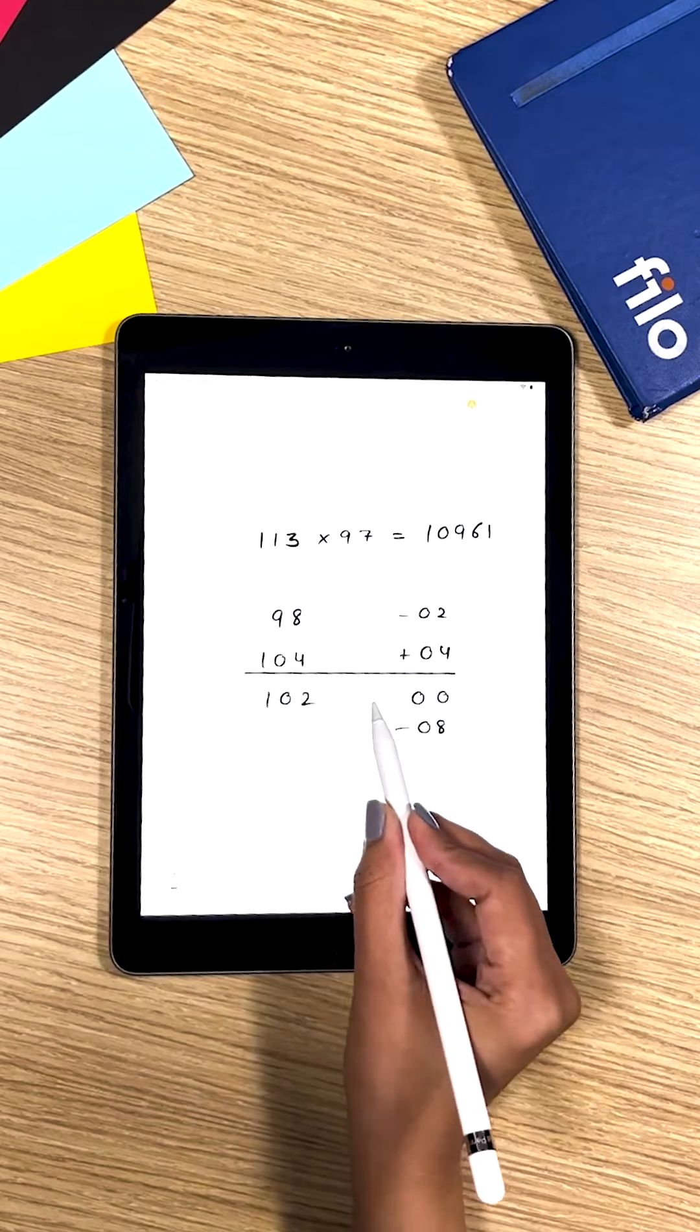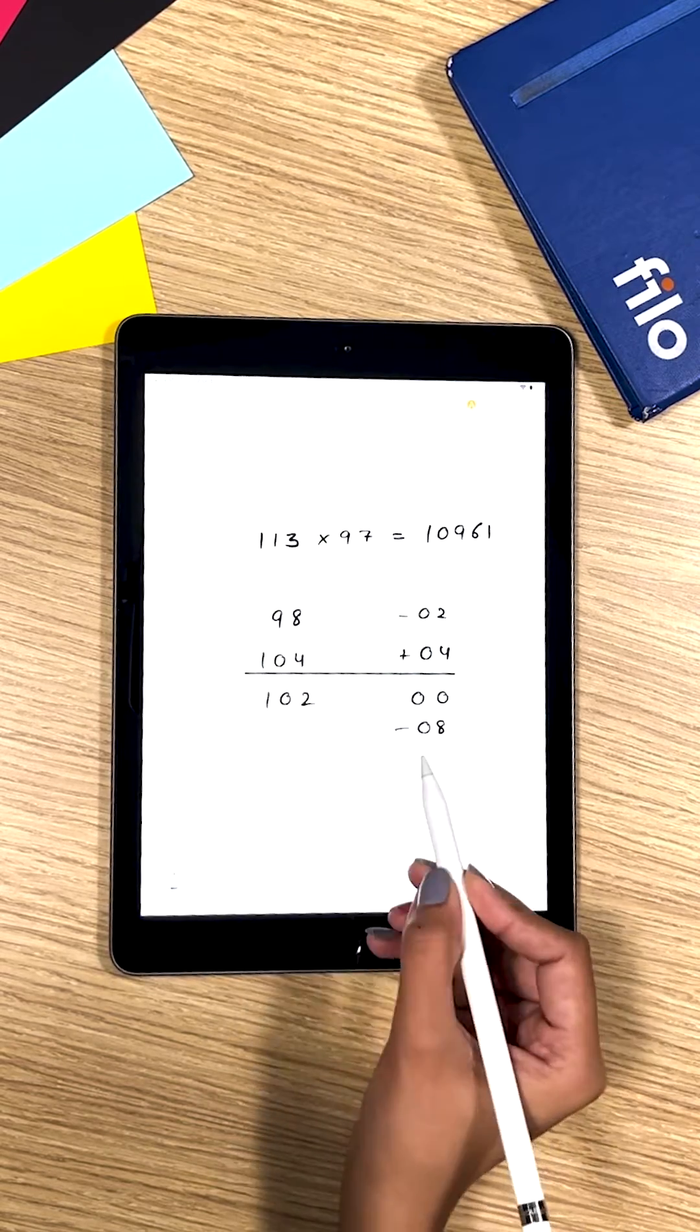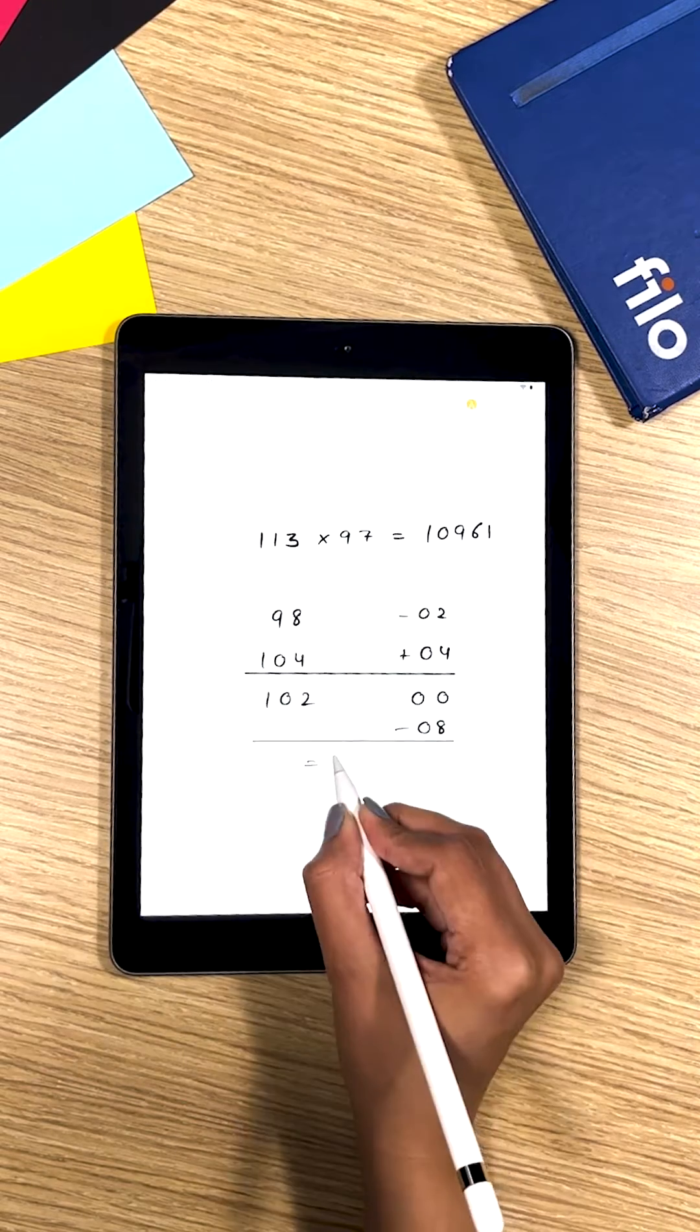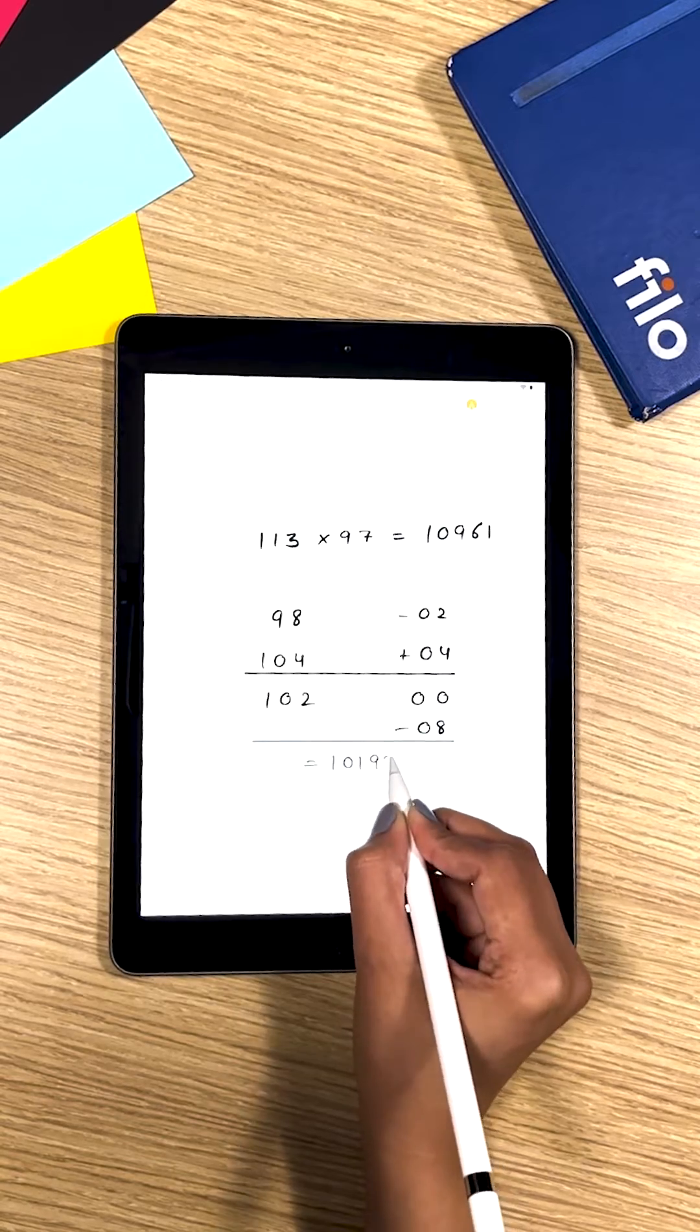Now this is negative so you should subtract 8 from the above digit. So you'll end up having 10192 and that becomes your answer.